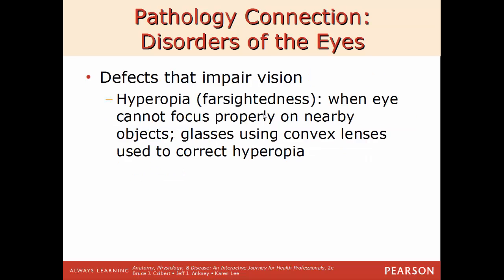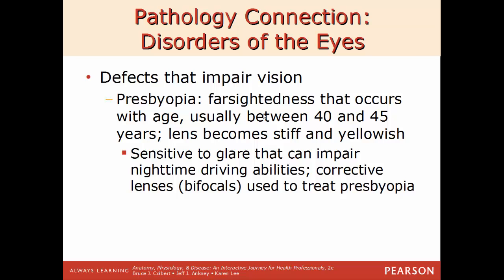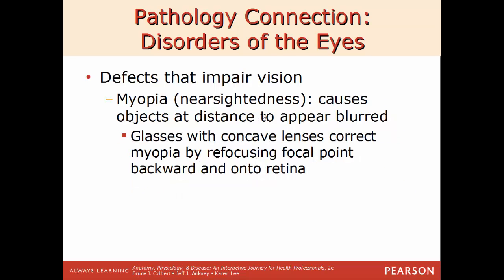Vision defects: farsightedness or hyperopia is where the eye can't focus properly on nearby objects — things far away are clear but things up close are blurry. It's corrected by wearing glasses with a convex lens to refocus light on the retina. Presbyopia is farsightedness that occurs with age, usually between 40 and 45 — the lens becomes stiff and yellowish, more sensitive to glare, impairing nighttime driving with halos around lights. It's treated with corrective lenses like bifocals.